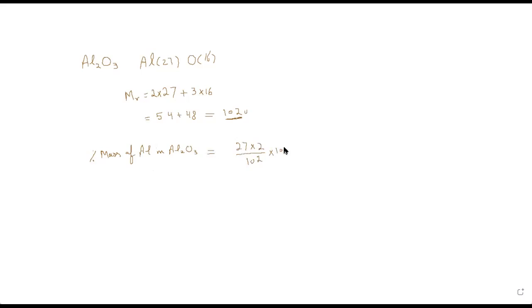Then multiply by 100 to get a percentage. So 27 times 2 is 54, divided by 102, gives approximately 53 percent. This means if we have a sample of aluminium oxide, we can obtain 53 percent aluminium by removing oxygen, for example using electrolysis.